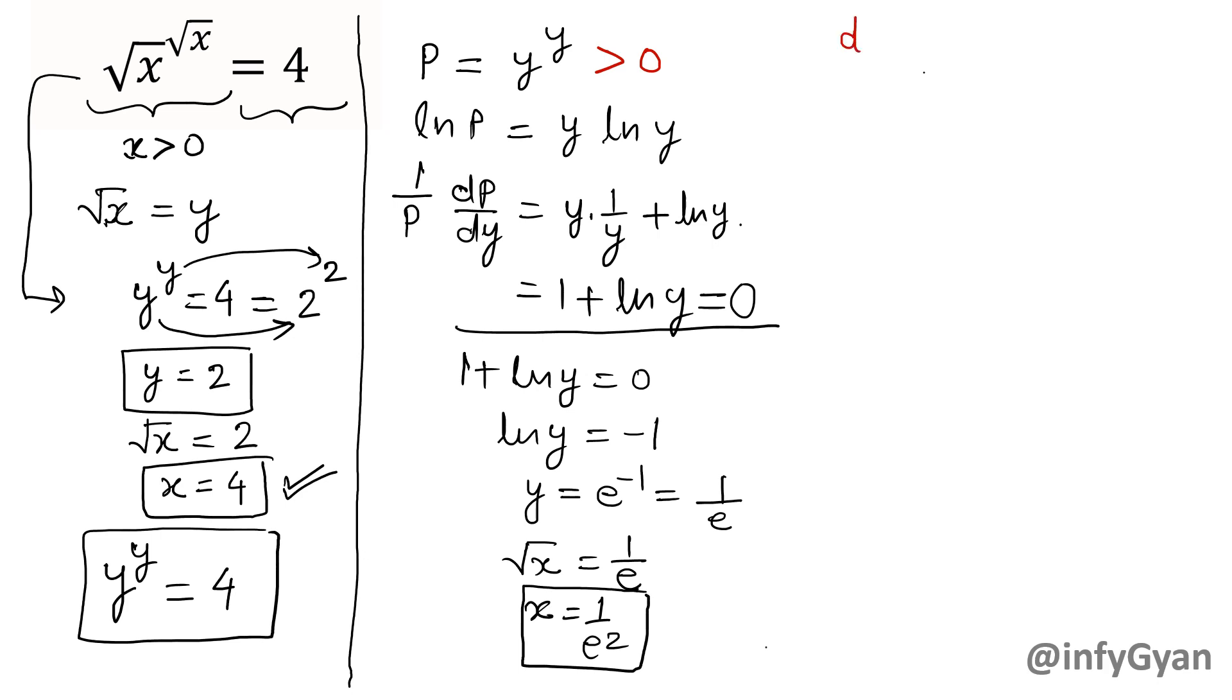So that will be - p is always positive. So from this equation dp/dy will be equal to... the derivative of ln y is 1/y. y is always positive you can say because y is √x. That value would be always positive.